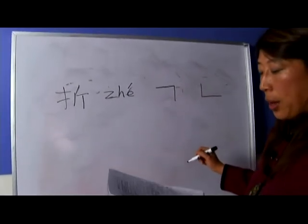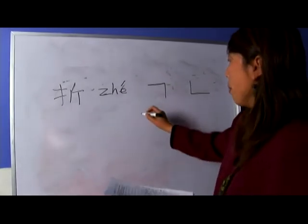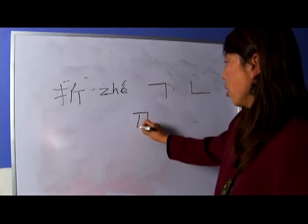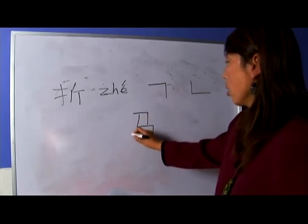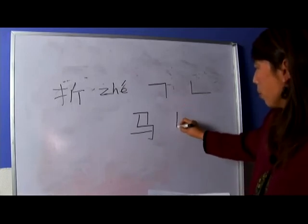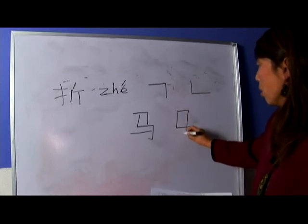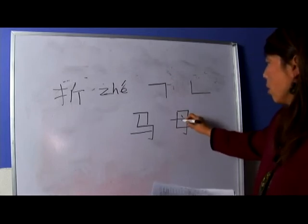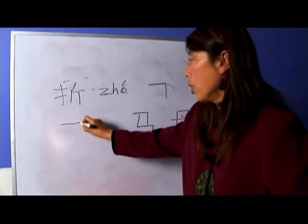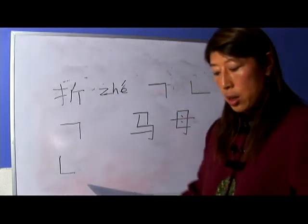You can see this stroke in characters such as ma, which means horse, or in mu. So zhe is either going down 90 degrees or going right 90 degrees.